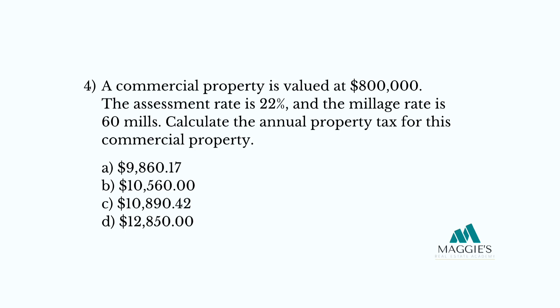And finally, question number four: a commercial property is valued at $800,000, the assessment rate is 22%, and the millage rate is 60 mills. Calculate the annual property tax. Step 1: convert 22% into a decimal — 22 divided by 100 equals 0.22.